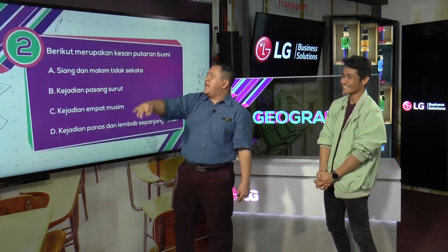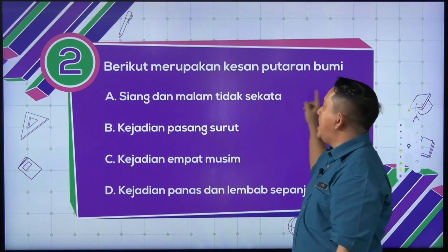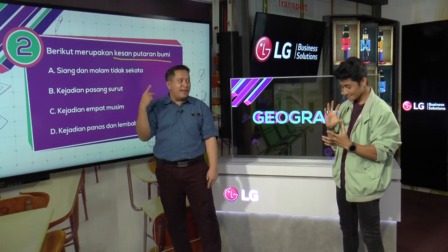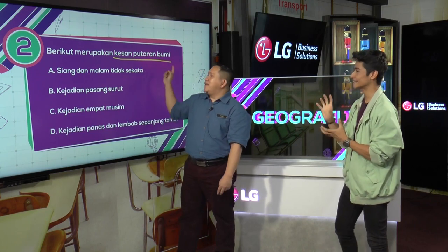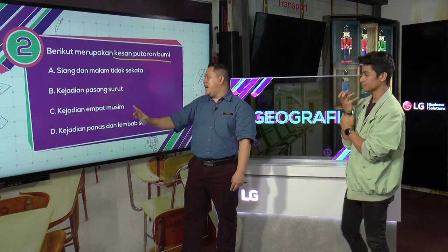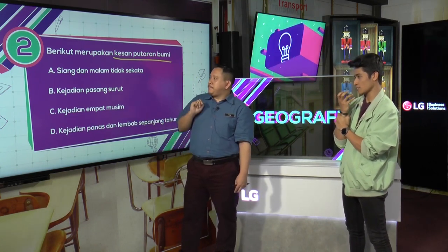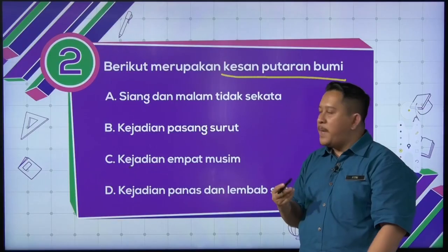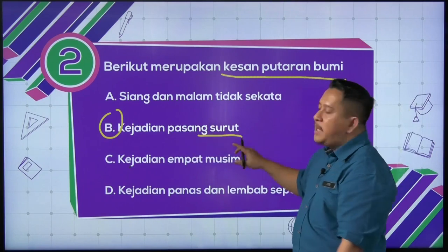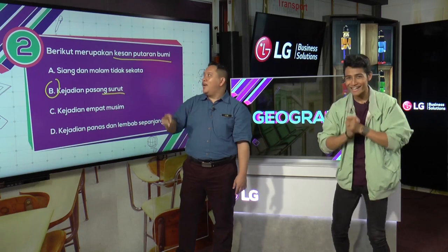Kita pergi soalan kedua. Berikut merupakan kesan putaran bumi. Dia tanya kesan putaran bumi. Siang dan malam tidak sekata. Kejadian pasang surut. Kejadian empat musim. Kejadian panas dan lembab sepanjang tahun. Jawapan dia B — kejadian pasang dan surut. Pasang surut apa ni? Air laut. Air pasang dan surut.